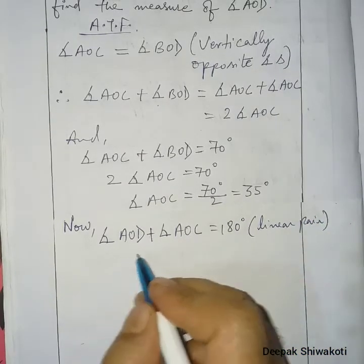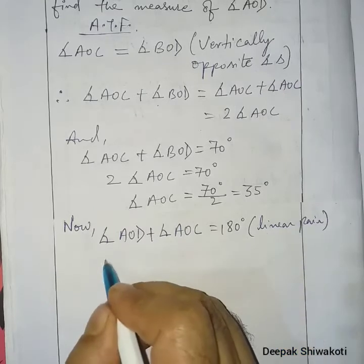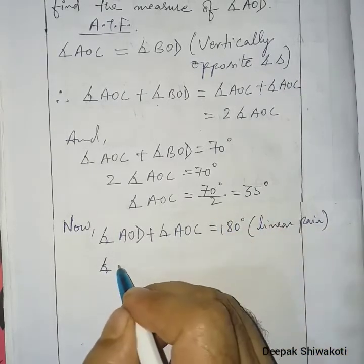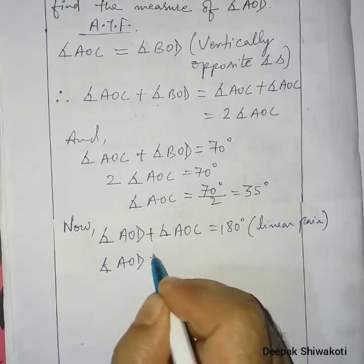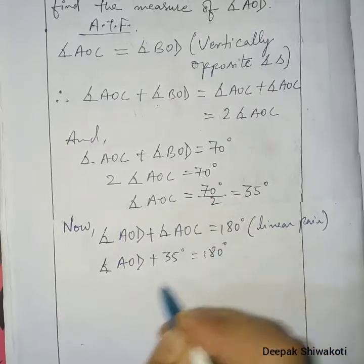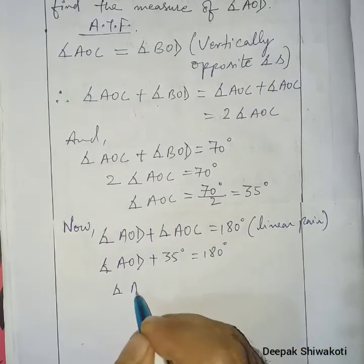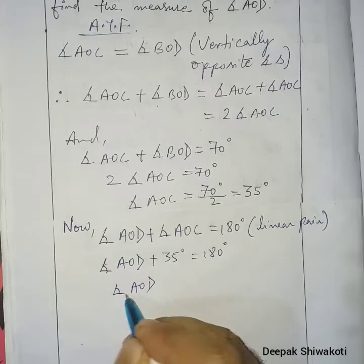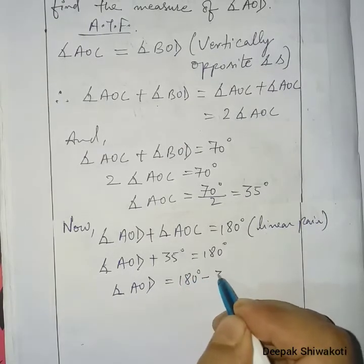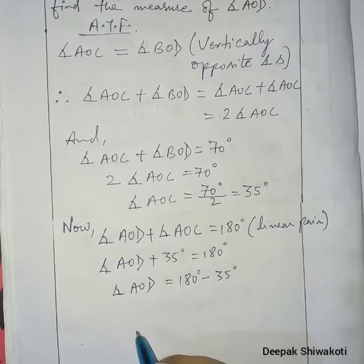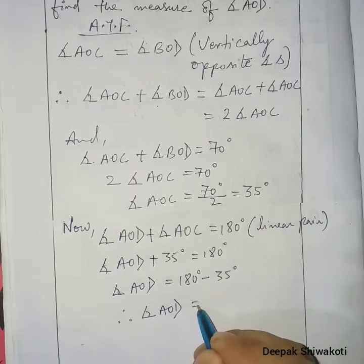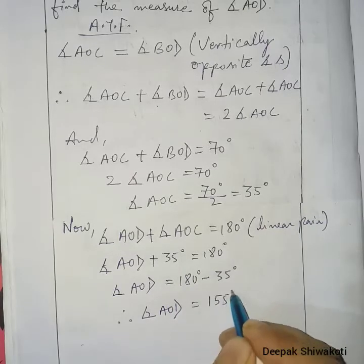Angle AOC we have found, that is 35 degrees. So in place of angle AOC we write 35 degrees. Therefore angle AOD is equal to 180 minus 35, which is 155 degrees.